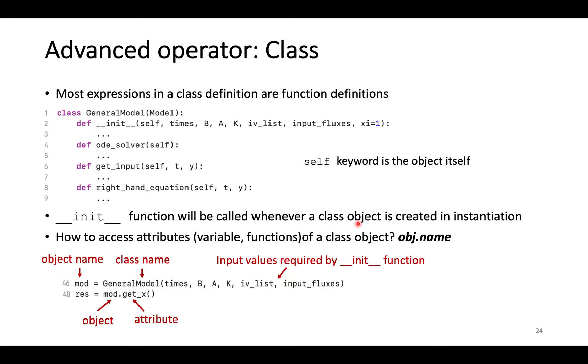Most expressions in a class definition are function definitions. Here is an example of general model class definition. All functions have a same parameter named self. The self keyword represents the object itself.